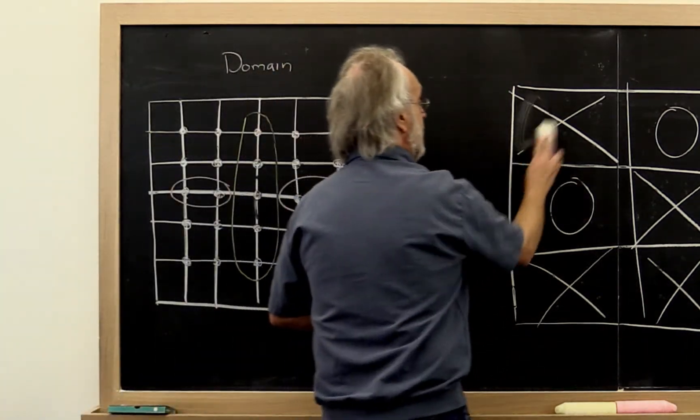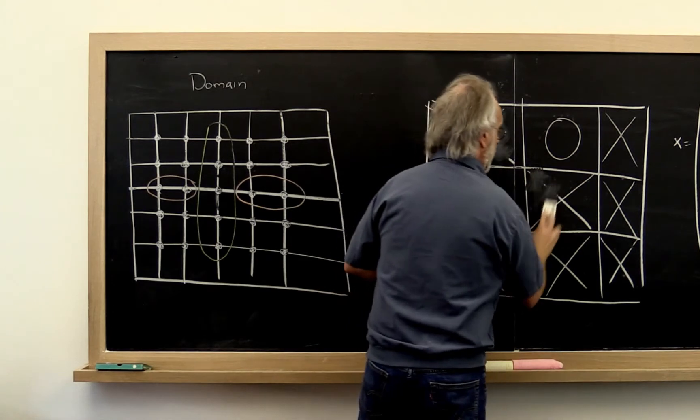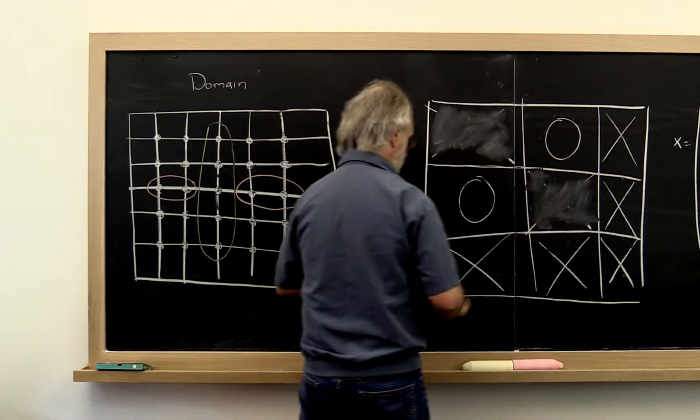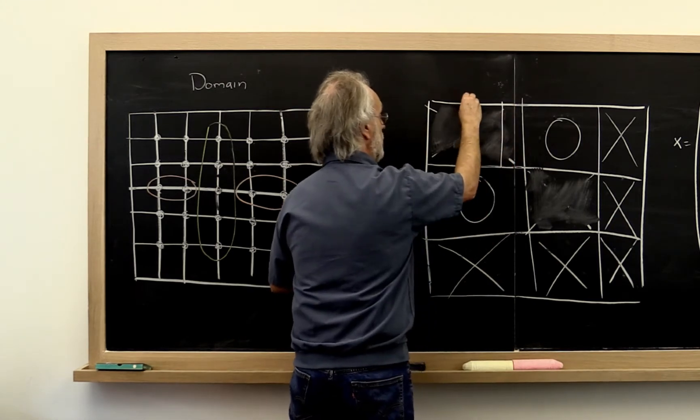What that would mean is that within this block and this block, we recursively get the same kind of arrowhead shape.